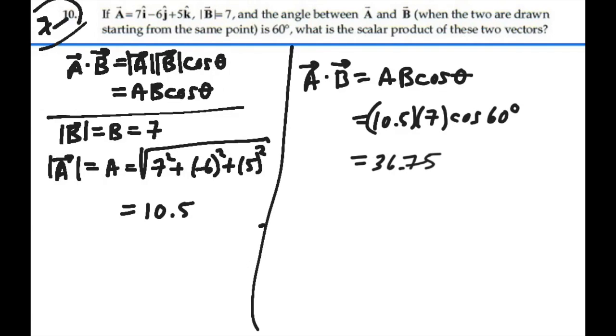So that is the dot product between these two vectors, a positive 36.75. And we'll see you next time.